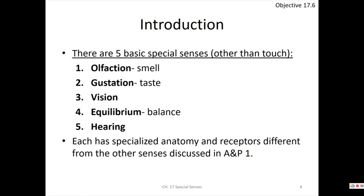The five special senses — other than touch — are olfaction (smell), gustation (taste), vision, equilibrium (balance), and hearing. These are different from receptors like Pacinian corpuscles or Golgi tendon organs. Special sense receptors are found only in their specific organ. You won't find an olfactory receptor in the esophagus, but you can find lamellated corpuscles throughout the entire body.